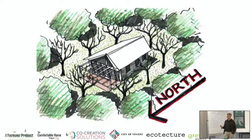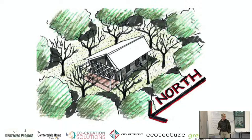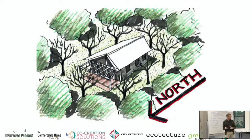Orientating the building the right way is very important, but so is your planting around the building. If you plant a lot of evergreens close to your building you're going to block solar access. Thinking about your landscaping as well as the building design is absolutely crucial — they're really integrated to make a building perform well.